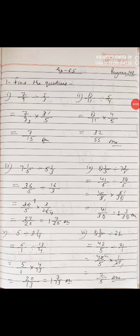Let's start Exercise 6.5, given on page number 103. The first sum is to find the quotient — division sums are there. These sums are just like multiplication with one step changed. As in the previous exercise, you have understood multiplicative inverse or reciprocal of fractions — that method we will use here in these division sums.